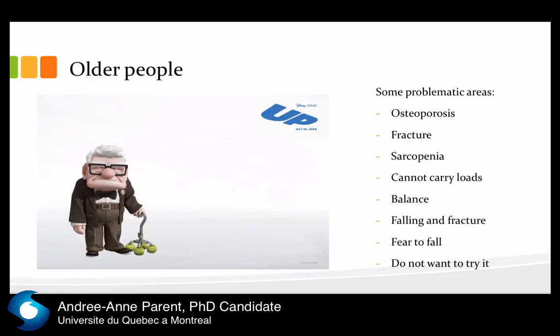For senior people, as we saw with the X-Post exoskeleton, they also have osteoporosis — a big risk of fracture that they truly fear. They also have sarcopenia, which is muscular atrophy due to aging. So they cannot carry loads and often have serious balance difficulties. The balance issue can be neurological, or it can be sarcopenia, or just dysfunction. How do you make this really secure against falling and fracture? The biggest fear of senior people is falling, because some fall, fracture a bone, go to hospital for an operation, and can die during that operation.